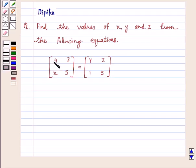Find the values of x, y, and z from the following equations. A matrix whose elements are 4, 3, x, 5 is equal to another matrix whose elements are y, z, 1, 5.